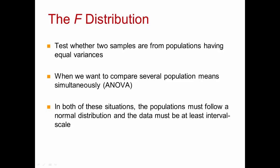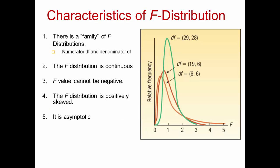There is a family of F-distributions, similar to a family of t-distributions. A particular member of the family is determined by two parameters: the degrees of freedom in the numerator and the degrees of freedom in the denominator. The distributions appear to touch the line due to software limitations, but they are truly asymptotic — they go out to infinity without ever touching the x-axis.